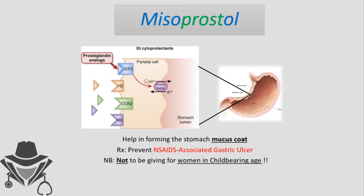Misoprostol replaces the prostaglandin present in the stomach lining, helping form the stomach mucus coat and preventing NSAIDs-associated gastric ulcer. However, it should not be given to women of childbearing age because misoprostol can induce uterine contractions leading to abortion. To remember: miso equals mucus — misoprostol protects the mucus coat of the stomach.